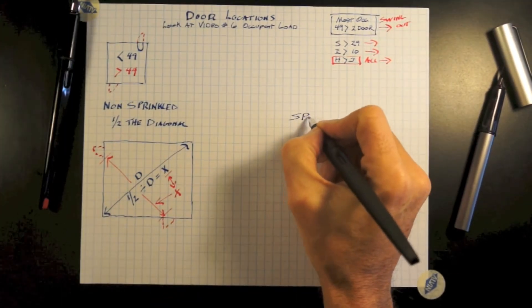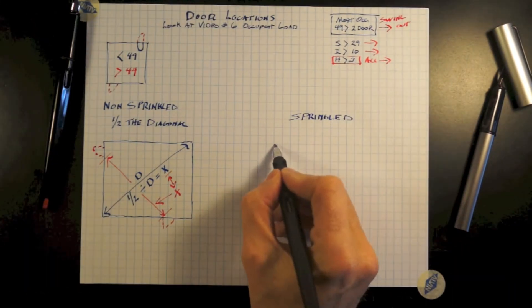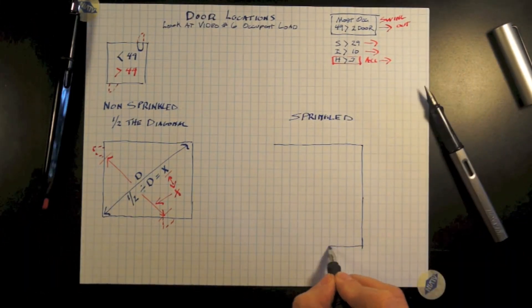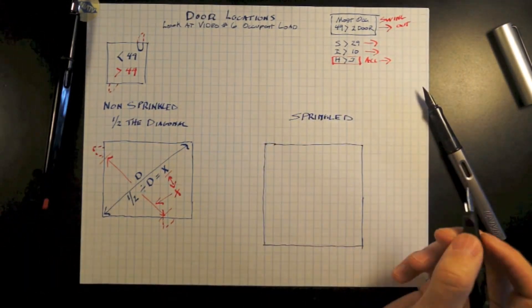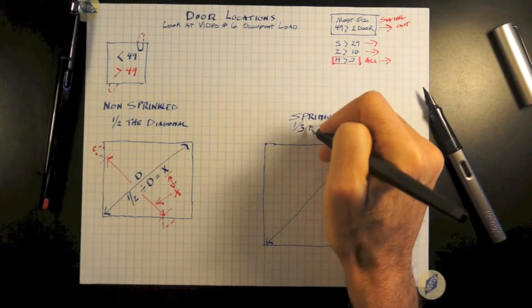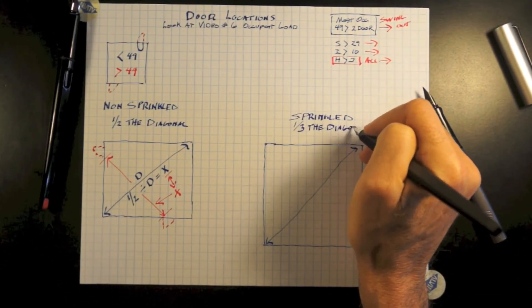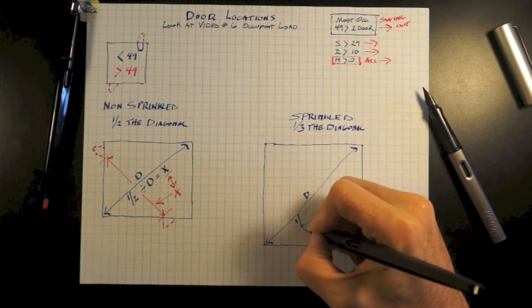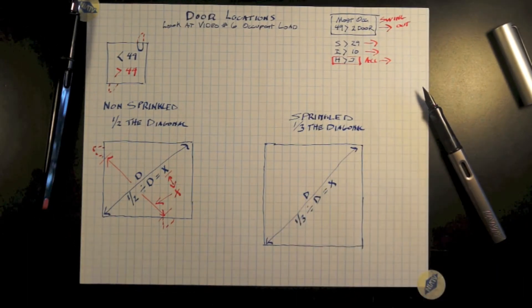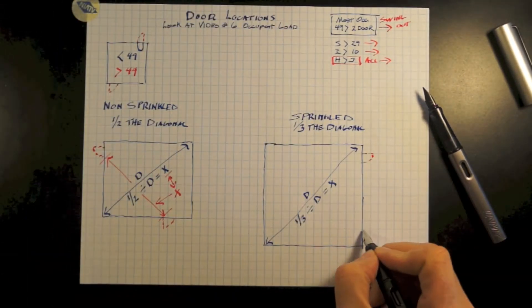Now, sprinkled buildings. On sprinkled buildings, it is not one half but one third. So you're given a slight advantage. So D divided by one third equals X. So therefore, our doors could be a little closer together.